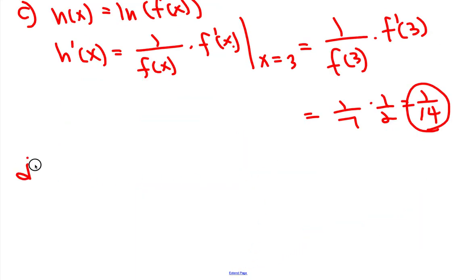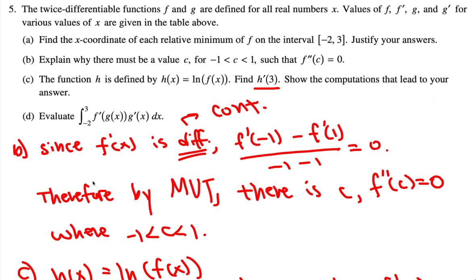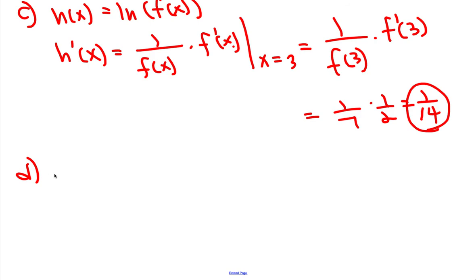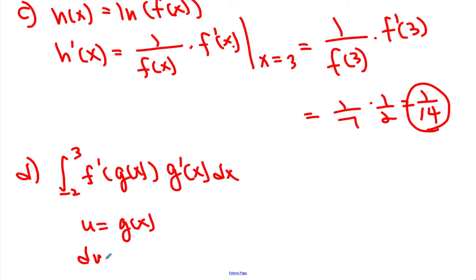Let's look at part d. Part d is they want us to integrate this one: negative 2 to 3, f' of g of x times g' of x dx. So then in this case I'm going to let u equals g of x. Then we know that du is equal to g' of x dx.